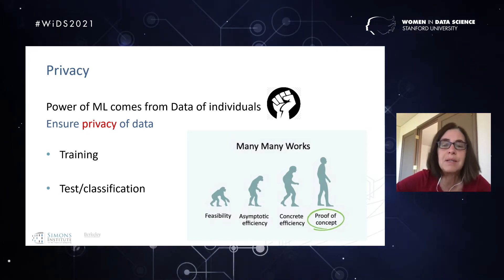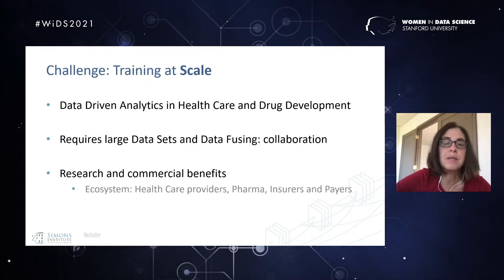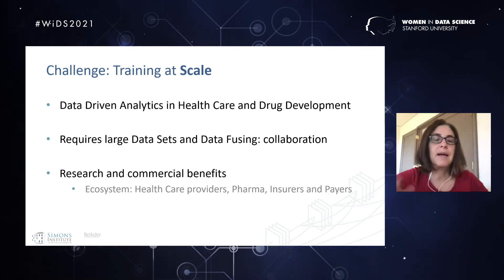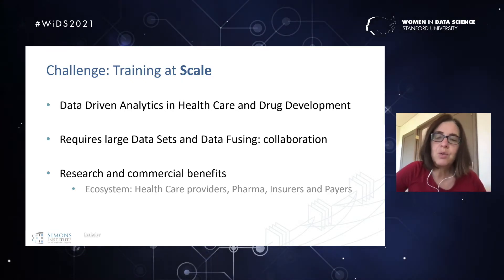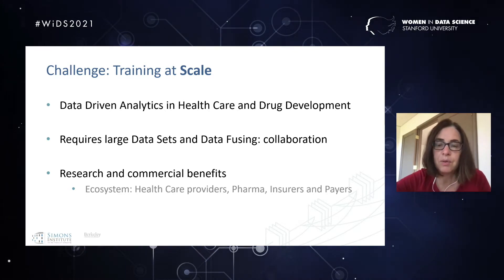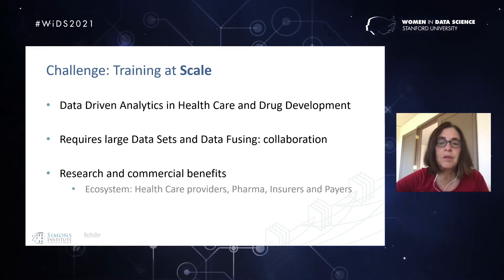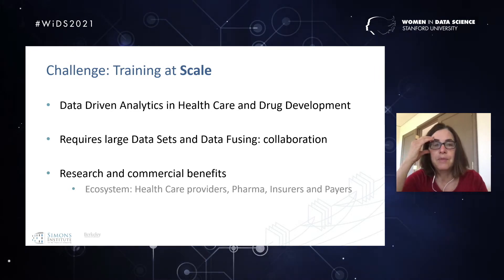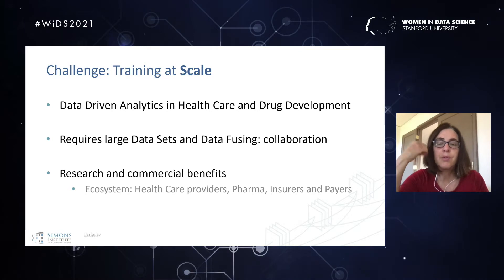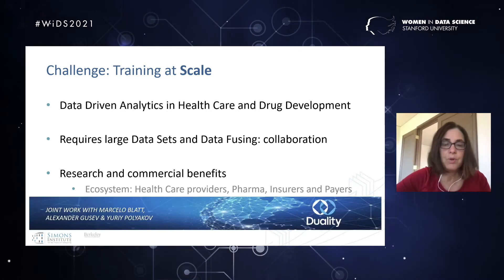There have been many works addressing this over the last four years, from feasibility results and asymptotic efficiency up through proof-of-concept systems. But the real issue is scale. When we want to do data-driven analytics in the health industry and drug development, we need huge amounts of data. This is not what demos or proof-of-concepts were optimized for. Often it requires collaboration between different hospitals or research centers, each holding a large cohort of data but not large enough on its own. We need to fuse this data together without revealing it to each other.